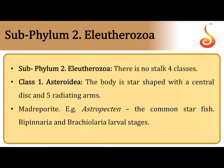Subphylum Eleutherozoa are those which can move around freely — they don't have a stalk. Under that you have Class Asteroidea. In Asteroidea, the best representative form is the sea star, whose body is star-shaped with five radiating arms. They do have a madreporite on the aboral surface along with the anus, whereas on the oral surface there is a central five-angled mouth.